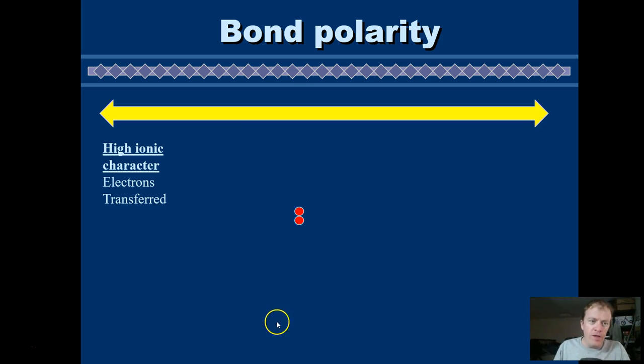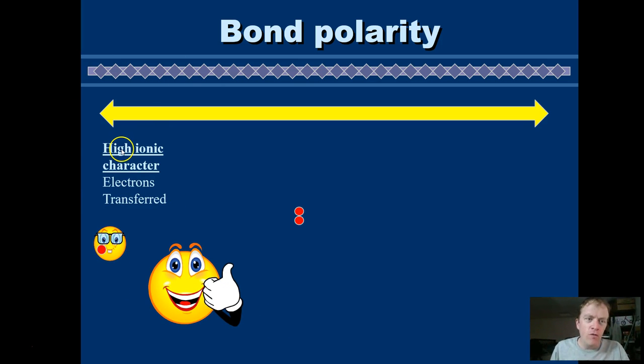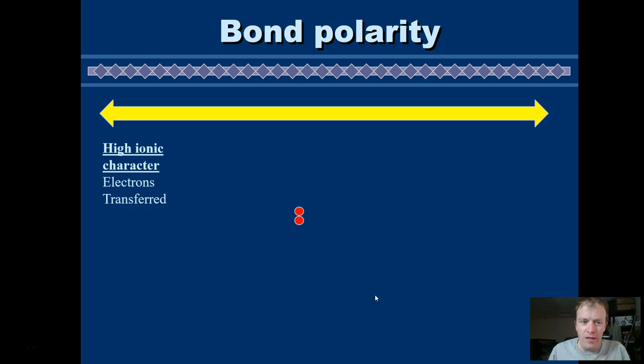So when electrons are shared unequally, that's a type of bond that we call polar covalent. And I'm going to show you kind of a spectrum here and try to make some sense of how this all works. So if we think about this, bonds over here on this side where we have a high ionic character, that's where electrons are going to be transferred. So the little red dot here is an electron.